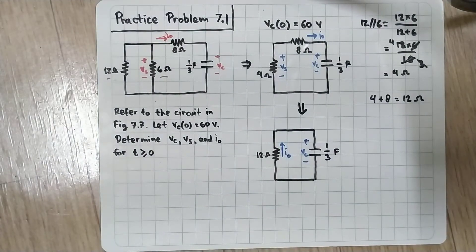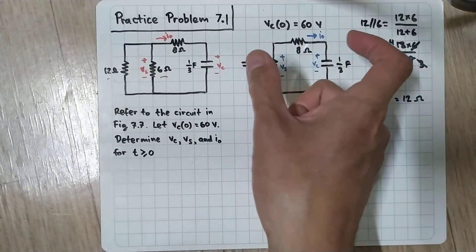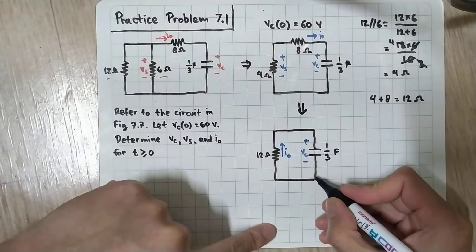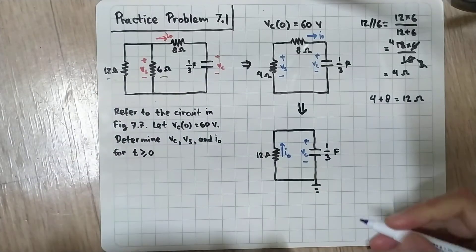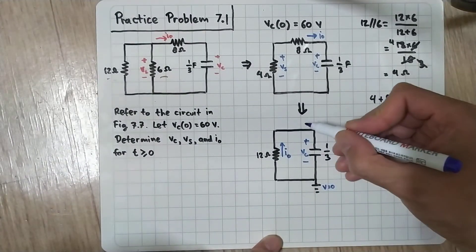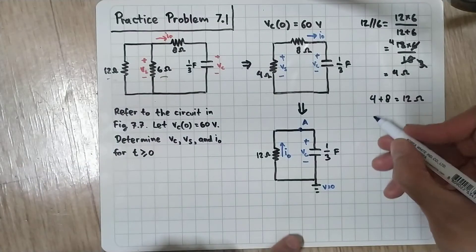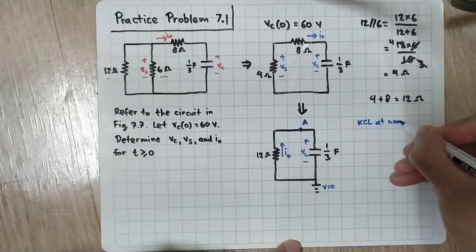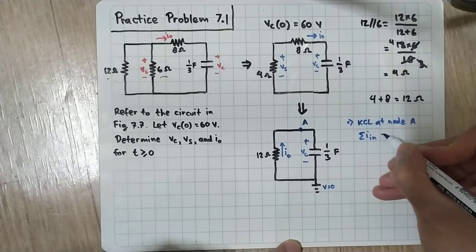Now we have a simple RC circuit, and we have the initial condition VC(0) = 60 volts, which will be useful later. We will perform nodal analysis on this circuit. I will choose the bottom node as ground — reference voltage zero — and use node A for KCL.